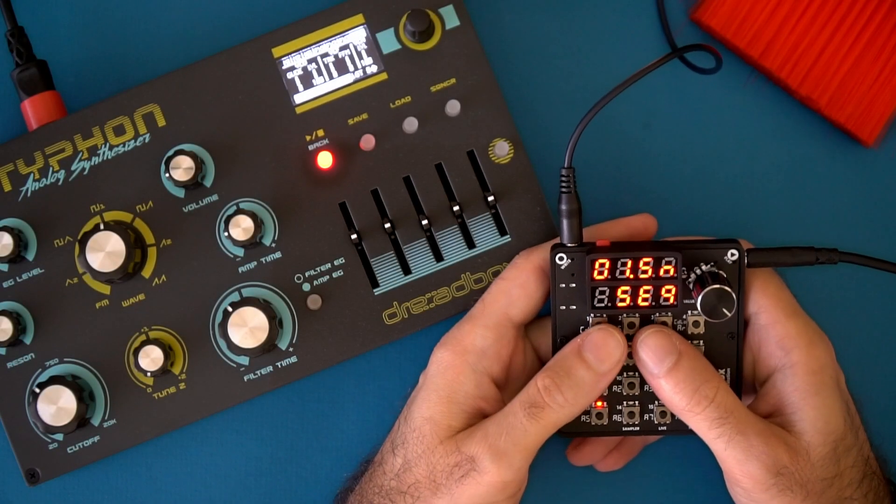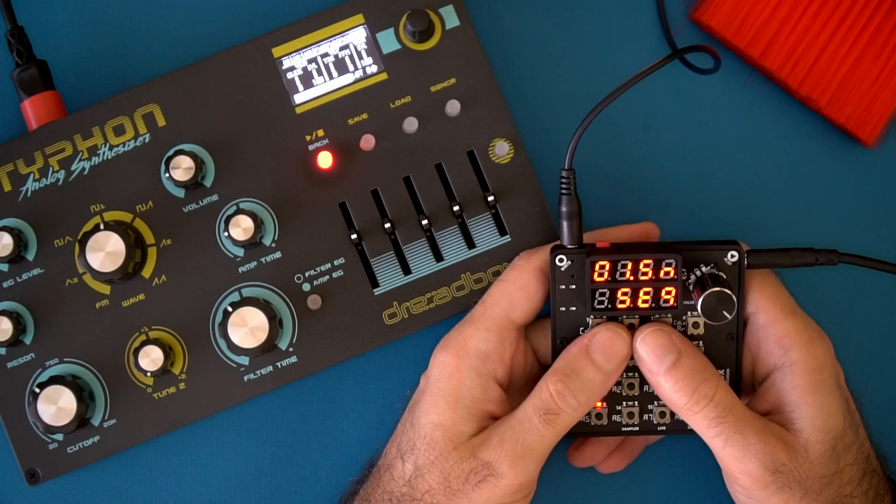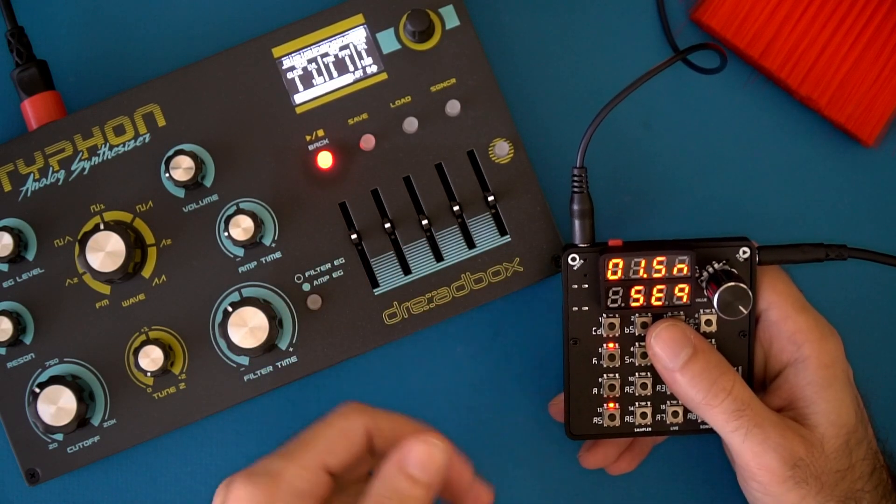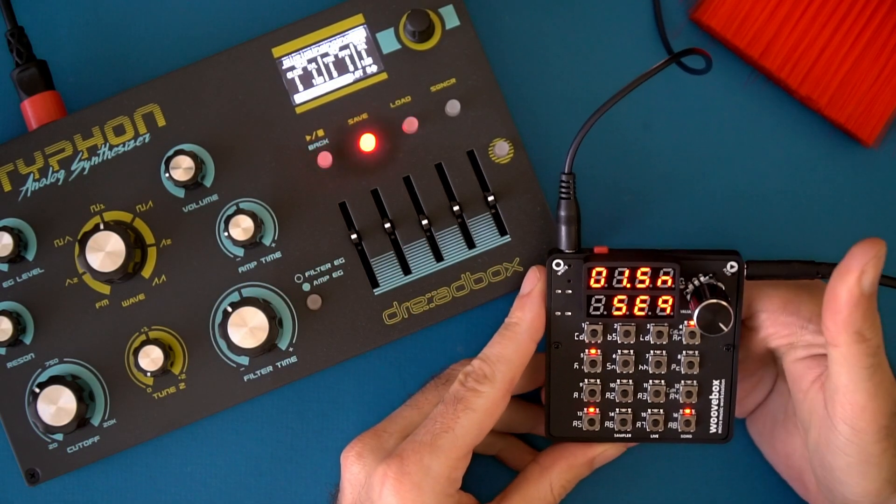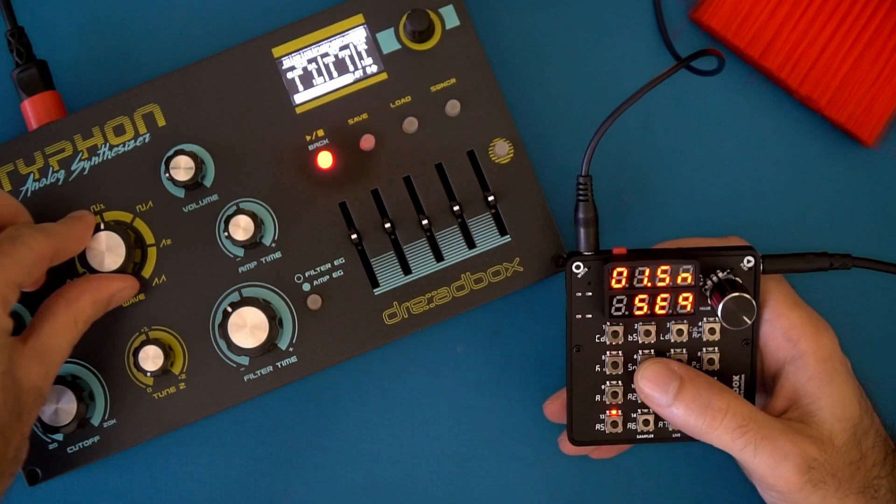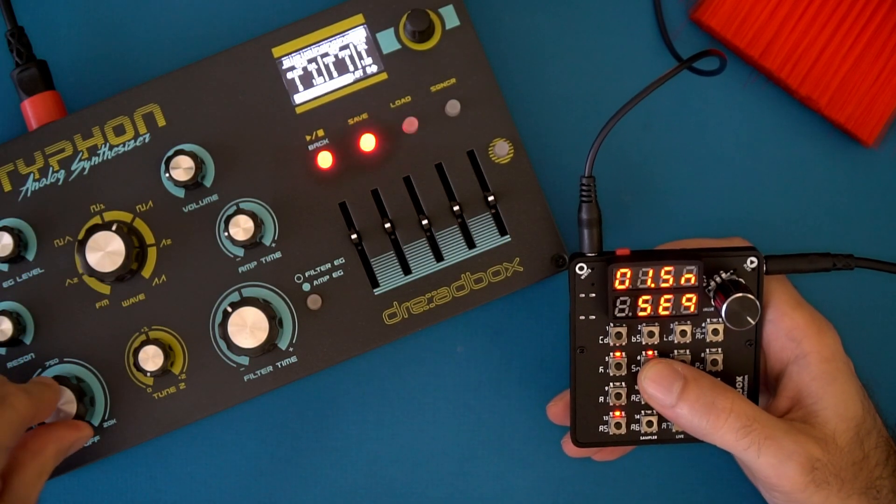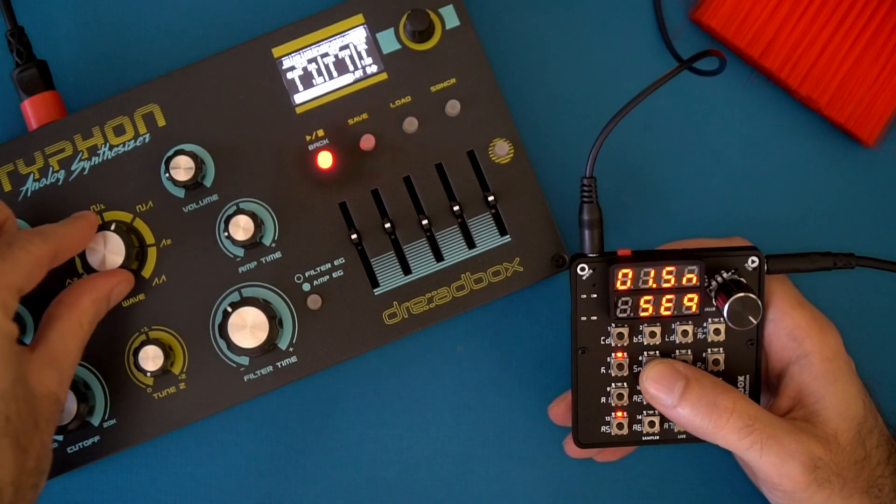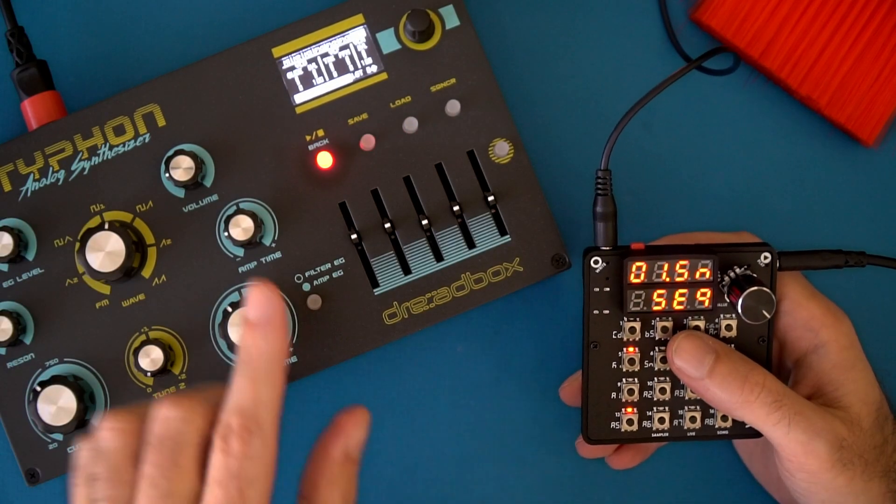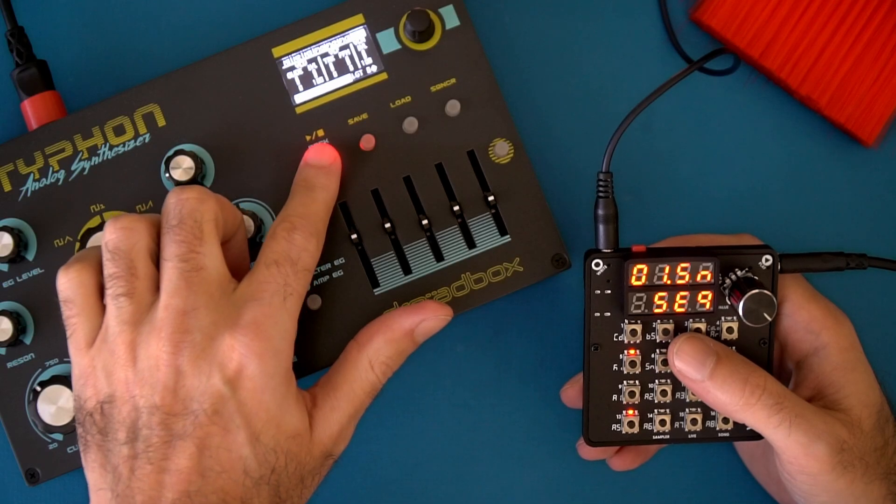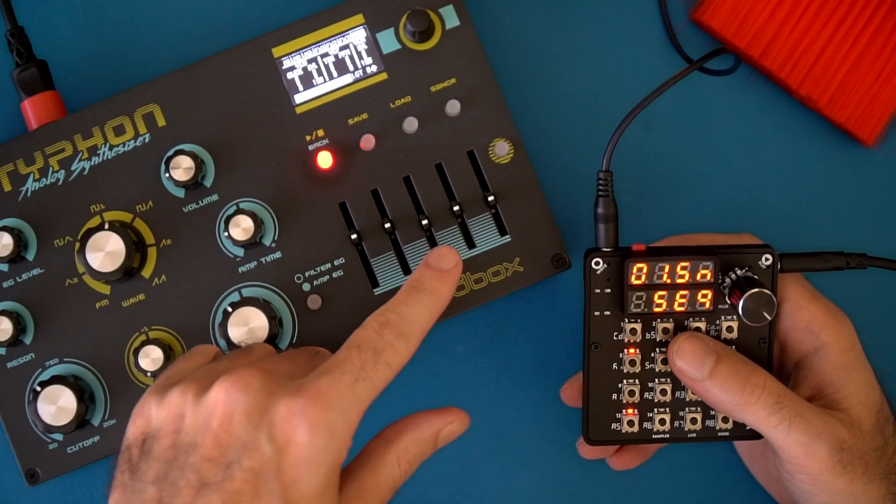The Woof Box will also send transport information through MIDI so you can start and stop sequencers like this one. In order for this to work you need to make sure your sequencer is going to be receiving external MIDI clock.